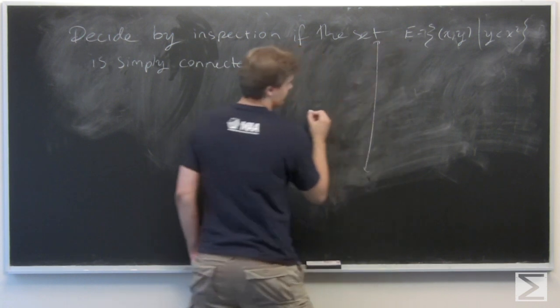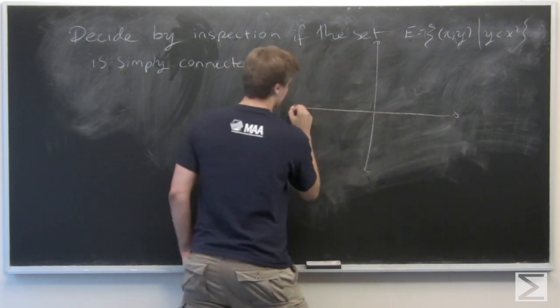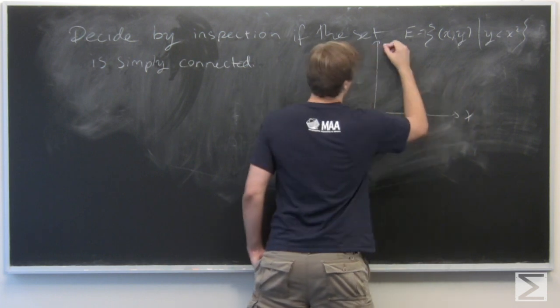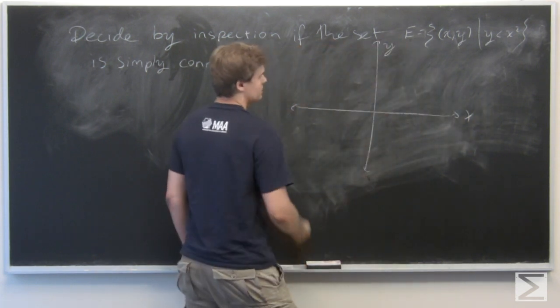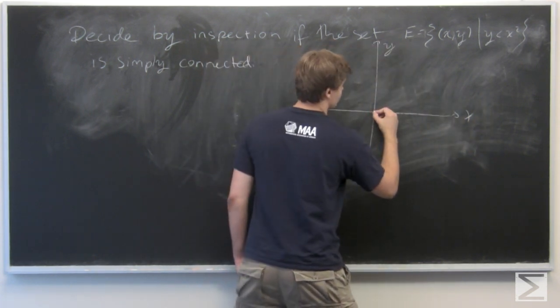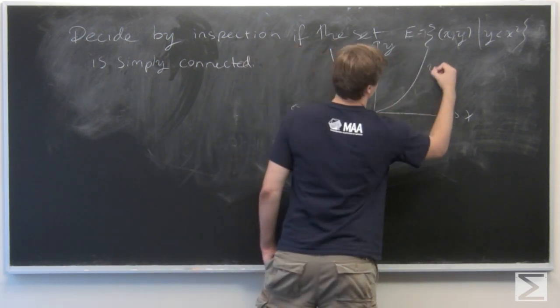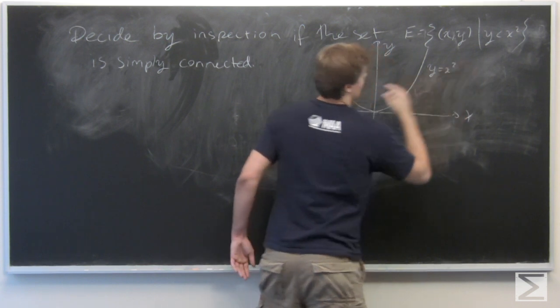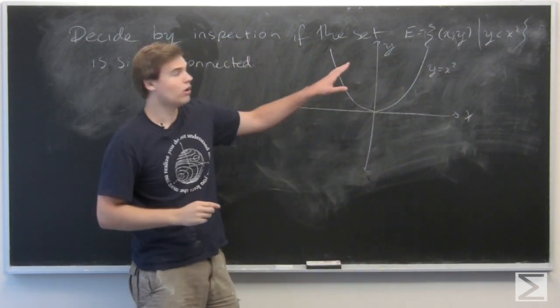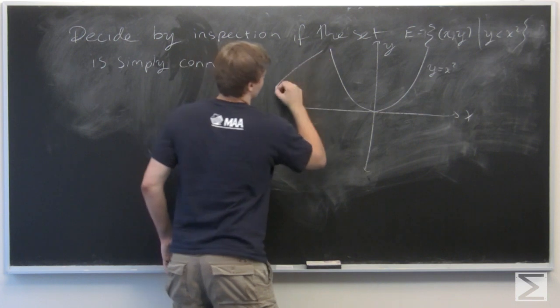So let's first draw it. So we draw the parabola first, y equals x squared. So that's y equals x squared. And the set of points satisfying that inequality are just going to be everything below the parabola.